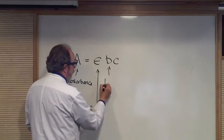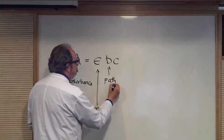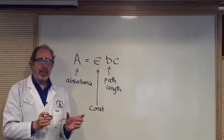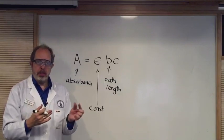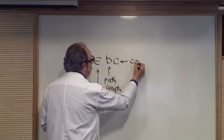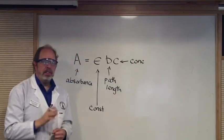B is path length. So if you're using a fat cell, it's going to absorb more light than just a thin one. And C is concentration, concentration of the colored species.